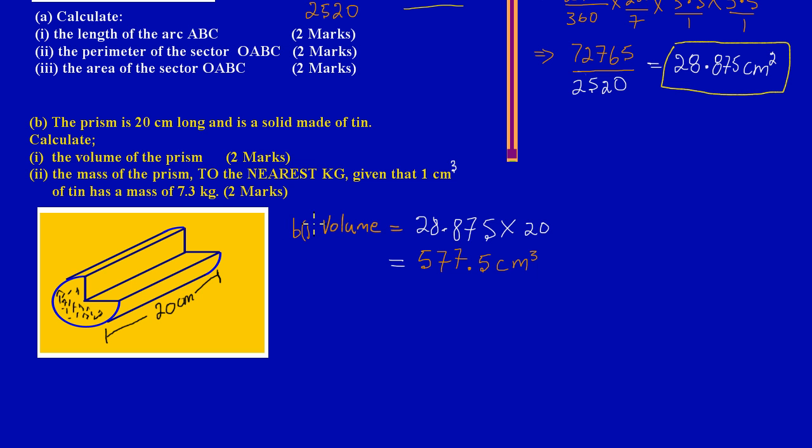Now let's look at part B2. In part B2, they gave us a statement: the mass of the prism. We're asked to calculate the mass of the prism to the nearest kilogram, given that one centimeter cubed of tin has a mass of 7.3 kilograms.